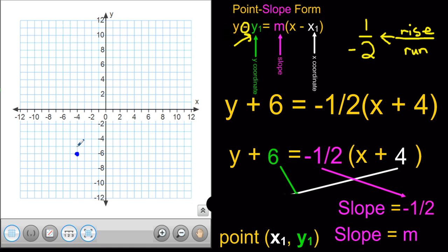Up 1 and to the left 2. And I'm going to continue this. Up 1, left 2. Rise 1, run 2 to the left because it's negative.